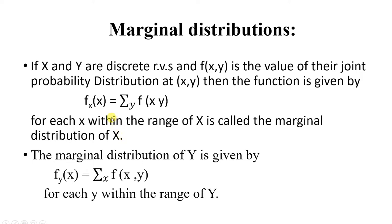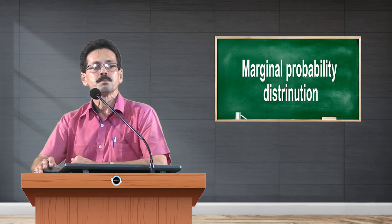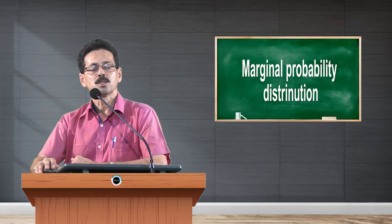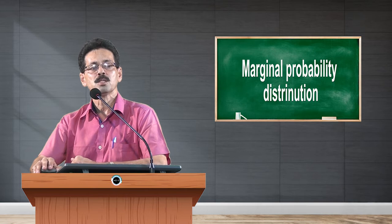Instead of f(x), we can write it as p(x). So p(x) means summation of p(x,y) where the summation is running over y. Similarly, the marginal distribution of y is given by f(y), which is equal to summing the joint probability distribution over x, for each y within the range of y.